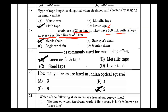For a metric chain, we can use 20 m or 30 m length. For a surveyor's chain, the length is 66 feet. In the engineering chain, the length is 100 feet.